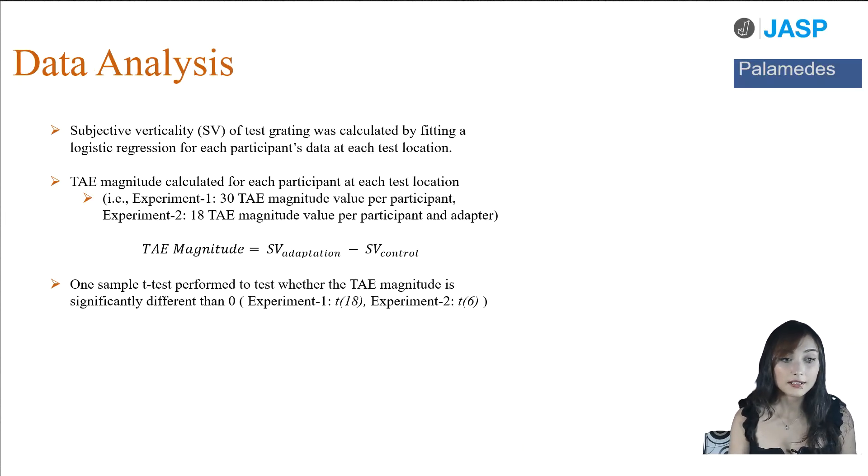To data analysis, we first calculated subjective verticality of test grating by fitting a logistic regression function for each participant's data at each test location. Then, we calculated tilt-after-effect magnitude by subtracting the subjective verticality of control condition from the adaptation condition. And finally, we performed one sample t-test to test whether the tilt-after-effect magnitude is significantly different than 0.